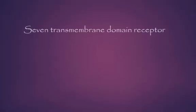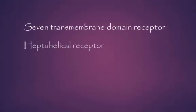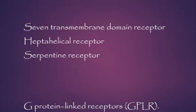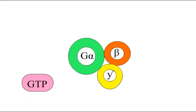These structural features give it several names such as seven transmembrane domain receptor, heptahelical receptor, serpentine receptor, and G-protein-linked receptors GPLR.